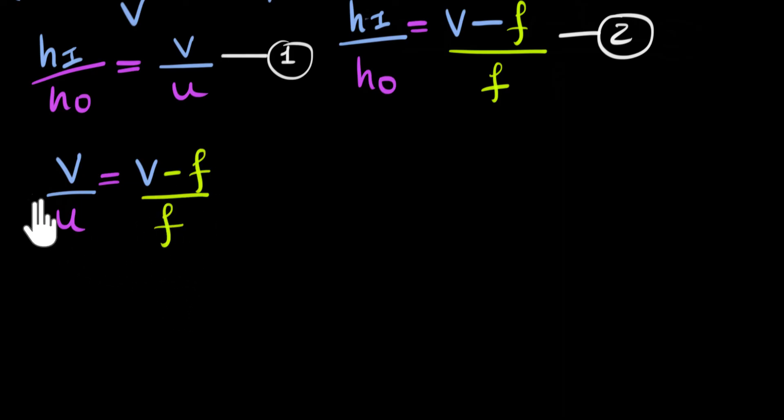And strictly speaking, we have gotten what we wanted. This is the only unknown. And U and F are known to us. So we have found out the relationship.